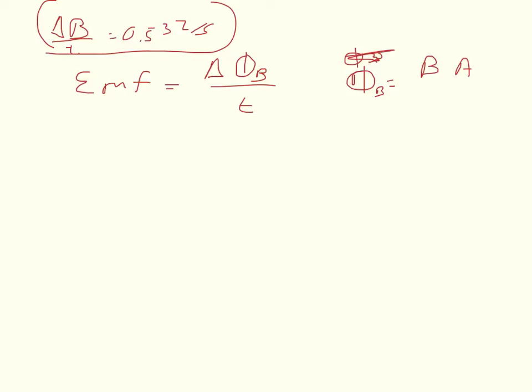Well, if my area stays the same and my magnetic field is constantly changing, then the change of B times A is going to equal the change of flux.